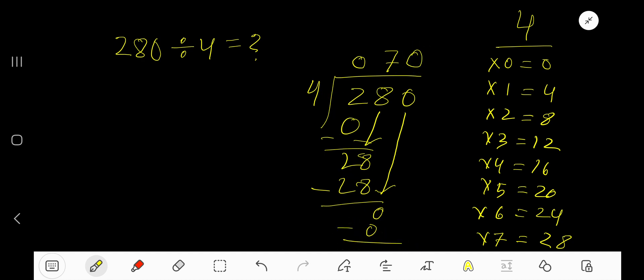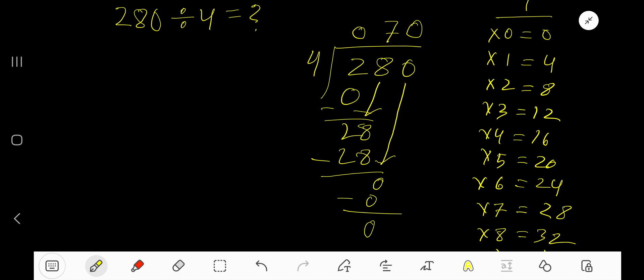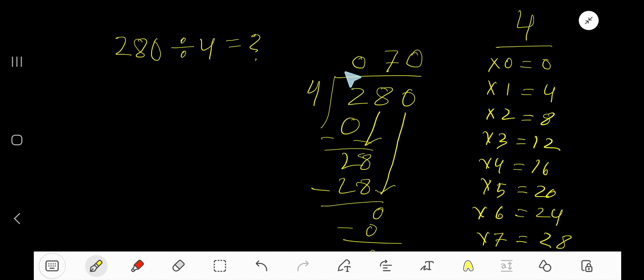Subtract 0. As our remainder is 0, so we can stop here. So 70 is our answer.